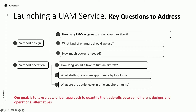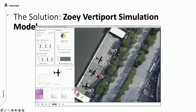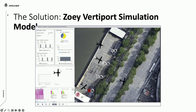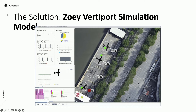Our team is trying to take a data-driven approach to answer these questions. But this is a new industry and we're starting a new service — there is no data. That's why we decided to simulate. We built our vertiport simulation model, which we call ZOE. The inputs are the vertiport topology, design parameters from the aircraft, and the flight schedule. We run the simulation for a day and collect data about vertiport performance — such as throughput, ground time, and asset utilization.